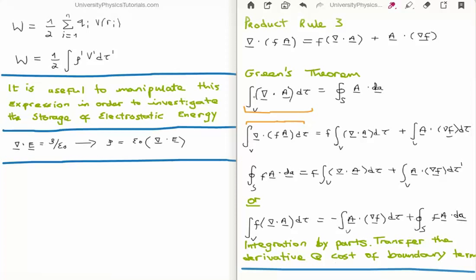Because if we integrate everything over the volume, which I've done down here, we see that in actual fact we have Green's theorem. So I integrate product rule 3 over a volume and sub in for Green's theorem.